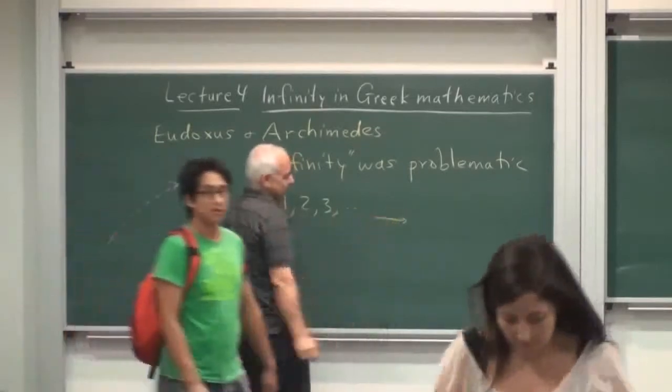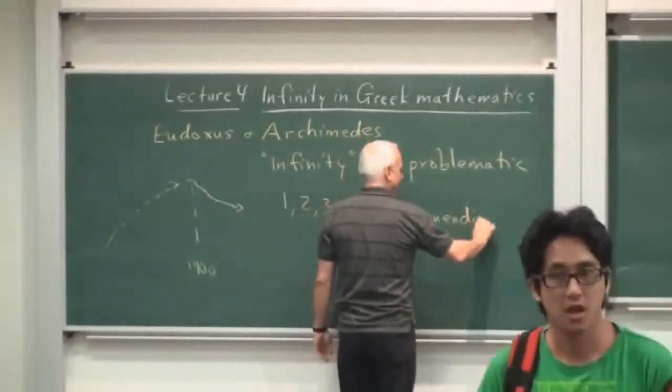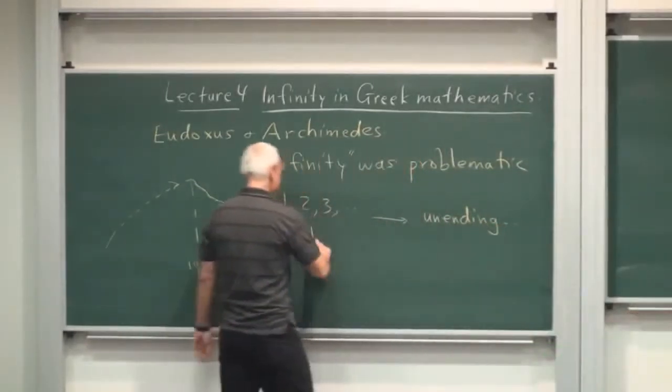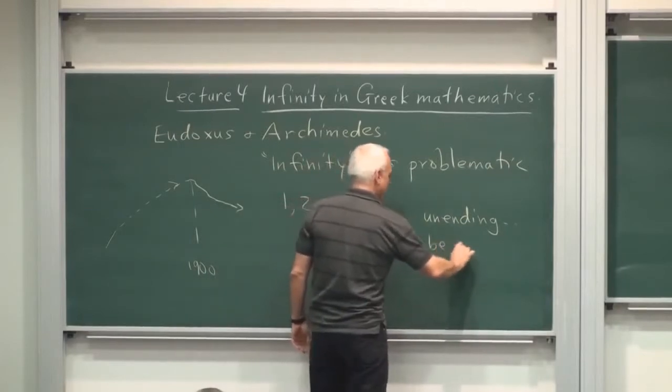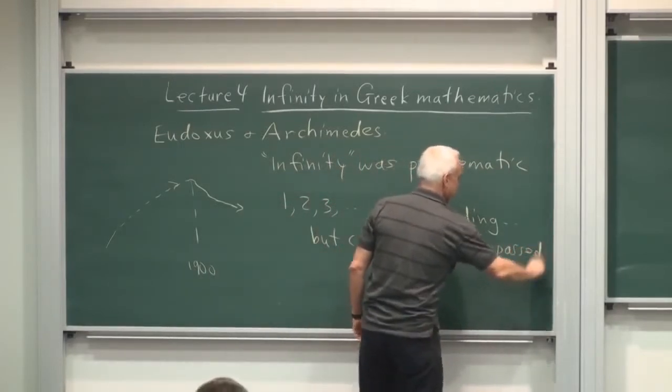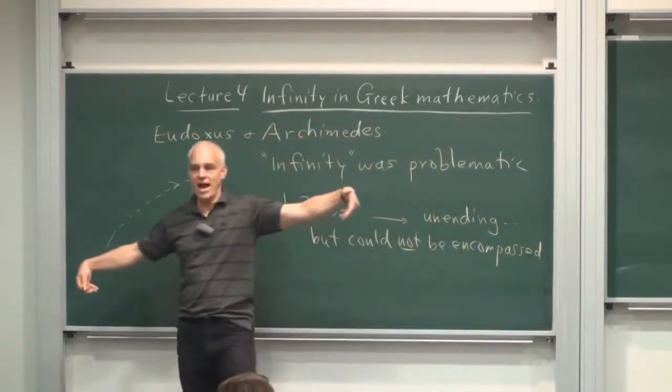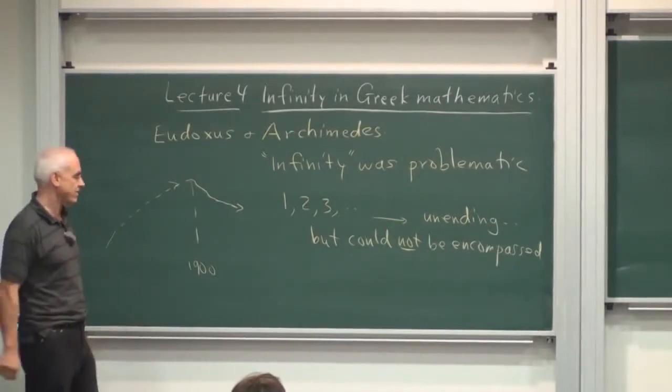So this kind of sequence, even though it was unending, could not be encompassed. It did not make sense to say, let's look at all of the natural numbers at once. That was not something that the Greeks did, they avoided saying that.